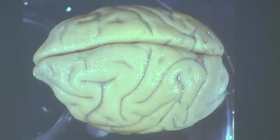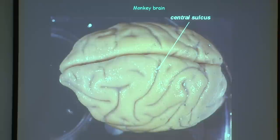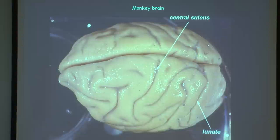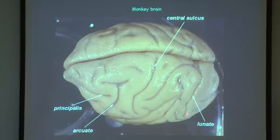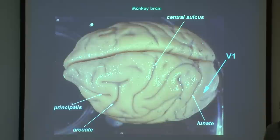For example, this is called the central sulcus. Humans also have a central sulcus. This is the lunate sulcus. Here are the arcuate and principalis sulci, which you will encounter repeatedly. This region at the back is the primary visual cortex in monkeys — it has been extensively studied and has yielded remarkable discoveries about the way it works. It is called area V1, or primary visual cortex.